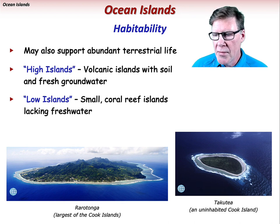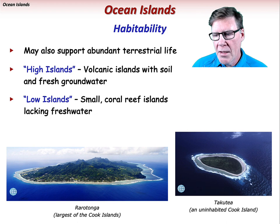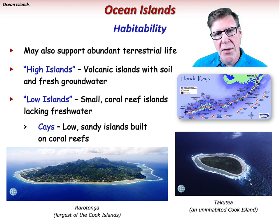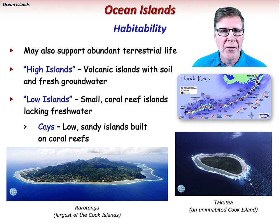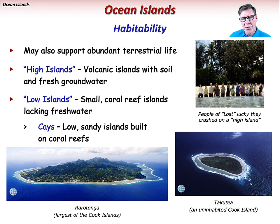In the Cook Islands of the Central South Pacific, Rarotonga is the largest island and represents a high island. Also in the Cook Islands, Takutea is an example of a low island — it's only six meters above sea level at its highest point. Keys are low, sandy islands built upon coral reefs. The Florida Keys are a famous example, a coral reef archipelago extending off the main Florida peninsula. Much of the series Lost was filmed on Oahu, most definitely a high island in the Hawaiian island chain.